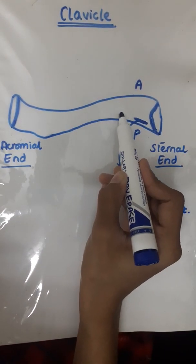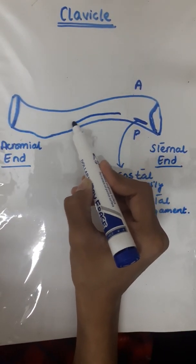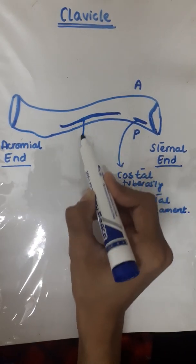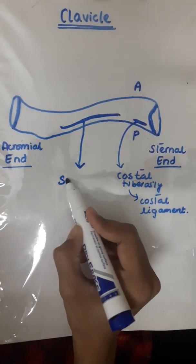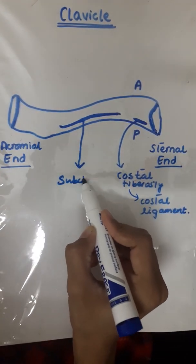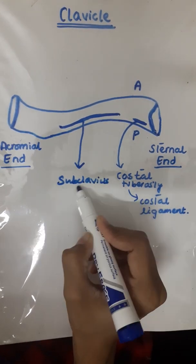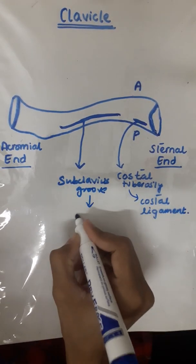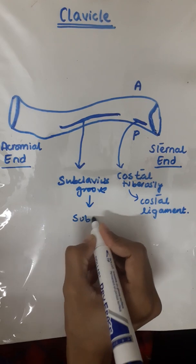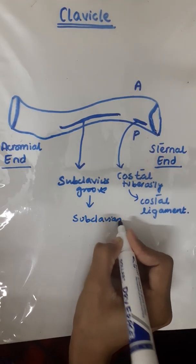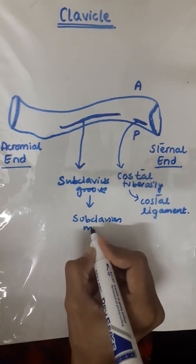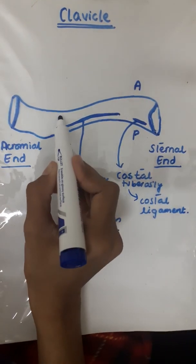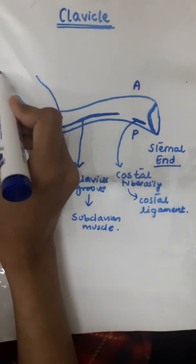In the body of the clavicle we have the subclavius groove, which provides attachment for the subclavius muscle. We also have the nutrient foramen here.